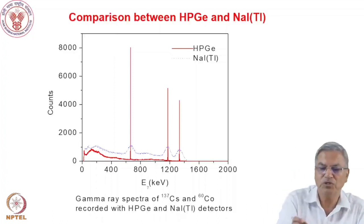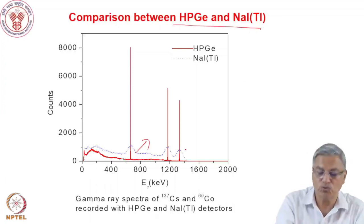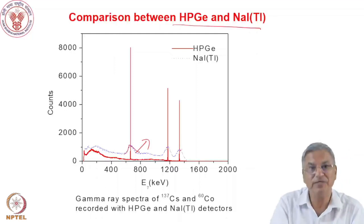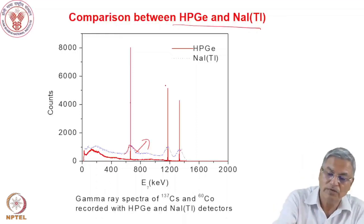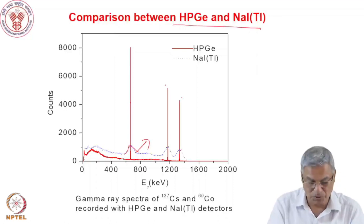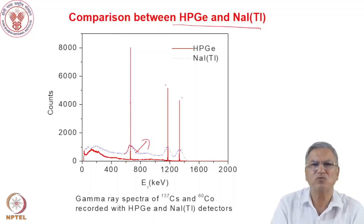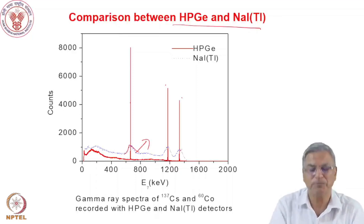Comparing gamma ray spectra of sodium iodide thallium and germanium detectors using Co-60 gamma rays at 1172 and 1332 keV, the germanium detector shows dramatically better resolution than sodium iodide thallium. For gamma spectroscopy, you always prefer germanium detectors. However, germanium detectors cost approximately 15–20 lakhs, compared to 2–3 lakhs for a sodium iodide thallium detector, so the choice depends on the required information — if high resolution is needed, go for germanium.